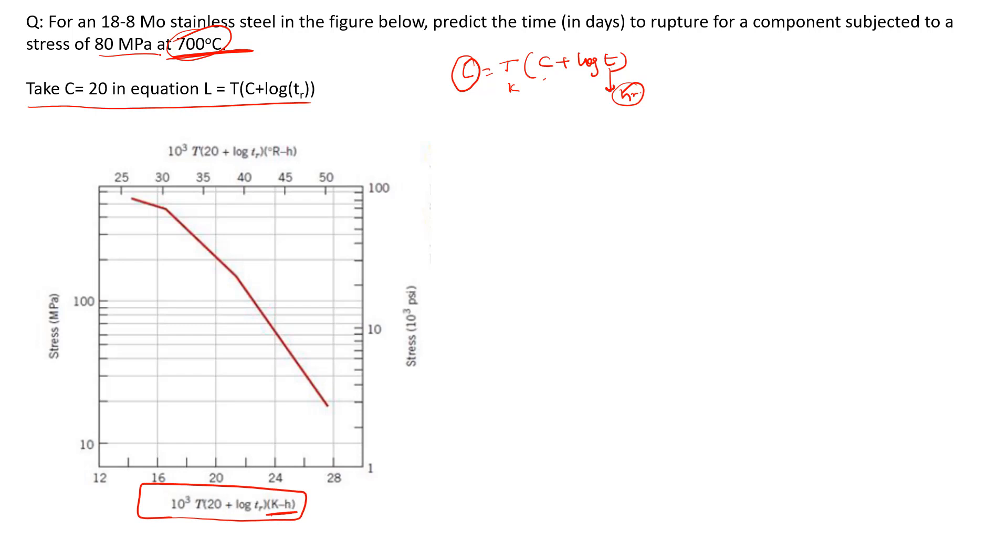This Larson-Miller parameter suggests that for a material at different stresses, a different parameter value is the limiting factor, after which the material will fail. So at 80 MPa, we need to find the Larson-Miller parameter.